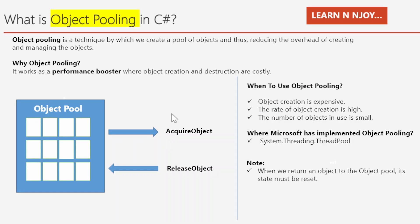What is object pooling in C#? Object pooling is a technique by which we create a pool of objects, thus reducing the overhead of creating and managing those objects. Object pooling is required because it works as a performance booster where object creation and destruction are costly.